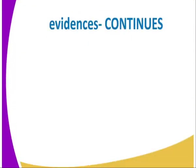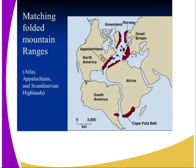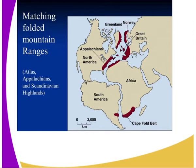We also have the next evidence: matching folded mountain ranges. If you look at where they are found, they are found in different continents. For example, we have the Appalachians and the mountains found in North Africa and also in Eurasia. We also have another one in Greenland and North America. If you bring them together, they were formed at the same time, which is evidence that these continents were once joined. In the same case, if you look at the Cape Fold Mountains and the ones found in South America, that is also another indicator that these continents were joined together at one time.